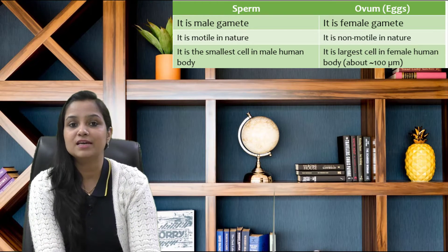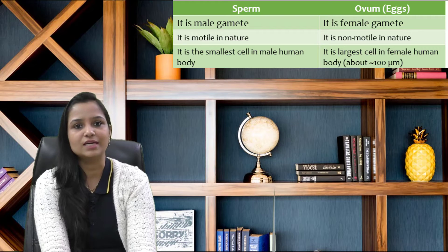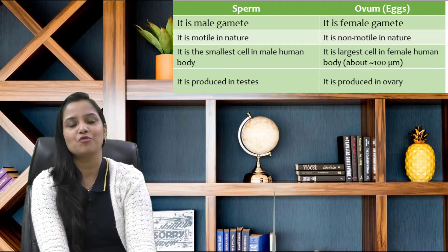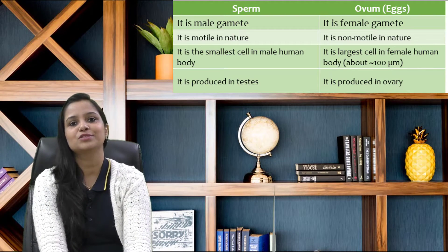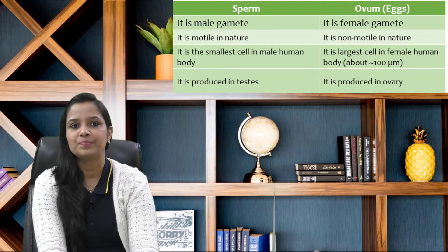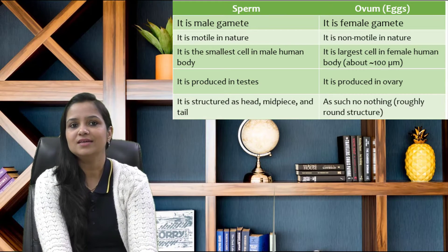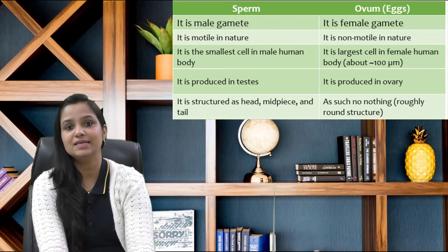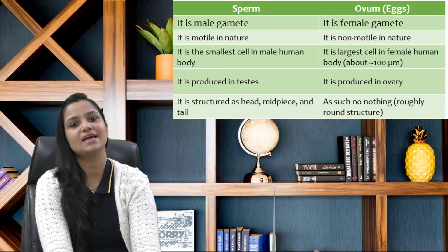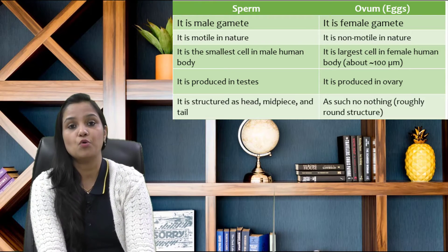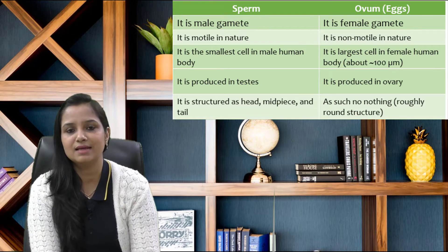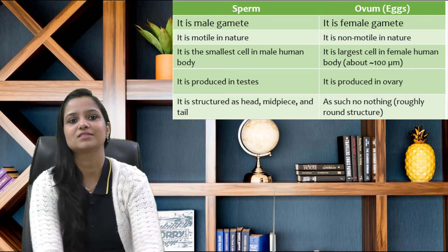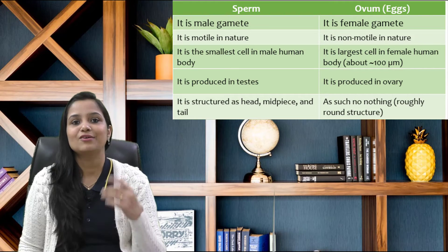The next point is related to their production or location. Sperms are produced in the testes and ovum are produced in the ovary. Now the next point is structure. The sperm structure contains three major parts: head, middle piece, and tail. When we talk about the ovum, it is a roughly round structure.